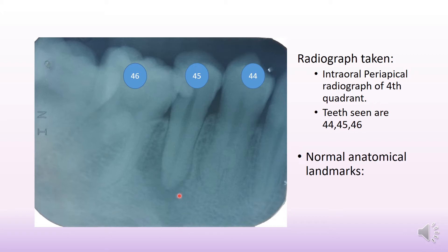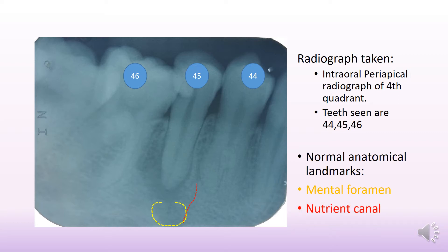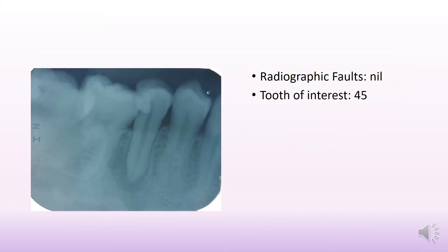For the normal anatomical landmarks, if you pay attention you will see some diffuse radiolucency here, pointed with the yellow outline. You will also see something like a faint linear shadow here — this would be the mental foramen, pointed in red.